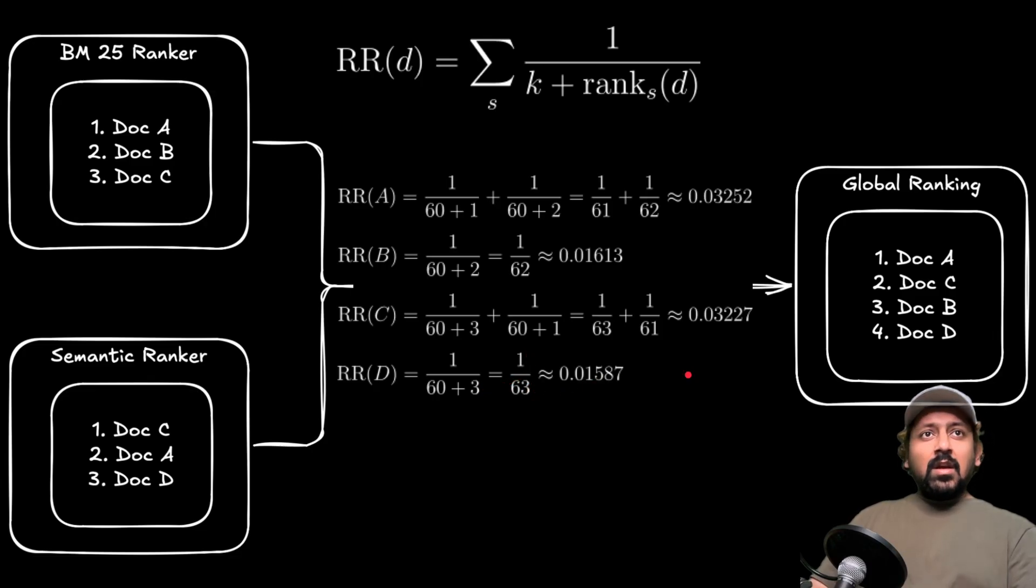And then we see all these numbers and we see, okay hey, document A has the highest number, so it goes to rank 1 in the global ranking. Then we have document C, then we have B, and then we have D. So this is it. That's all you need to know in reciprocal ranking fusion.